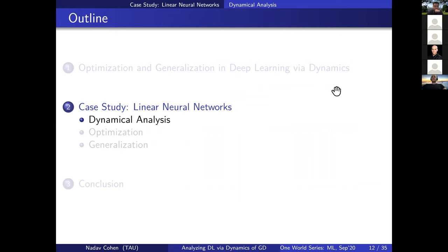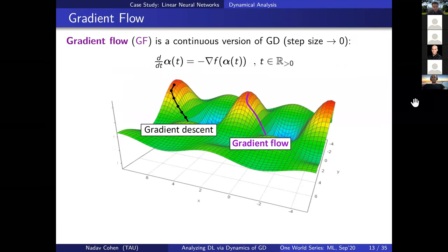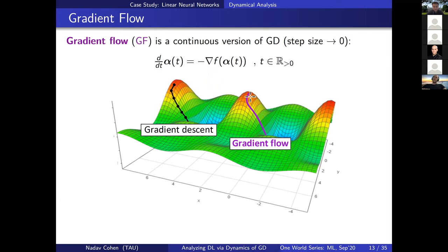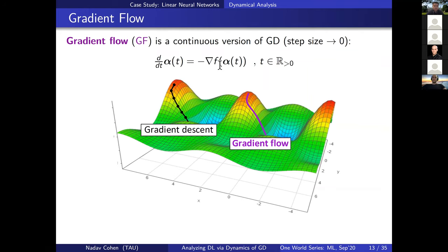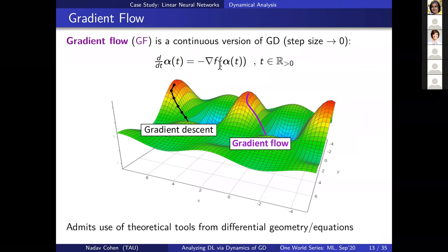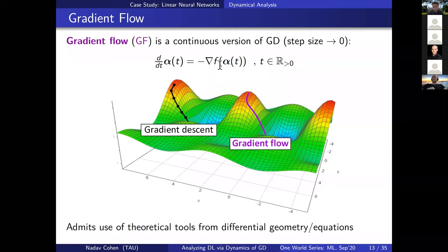We're going to analyze the dynamics of gradient descent over linear neural networks, come up with characterizations, and then use them to derive results on optimization and generalization. A technical tool that's very useful for us is gradient flow — a continuous version of gradient descent, what you get when you take the step size to be infinitesimally small. If gradient descent takes discrete steps, gradient flow is a continuous curve in space where the direction of movement at every point in time is opposite to the gradient of the objective. This allows us to employ continuous mathematical machinery, and results derived can be later translated to gradient descent.